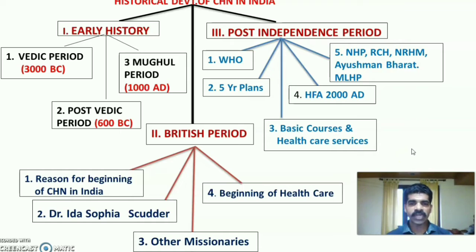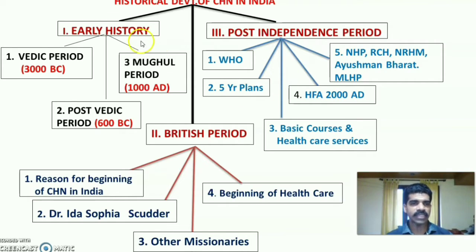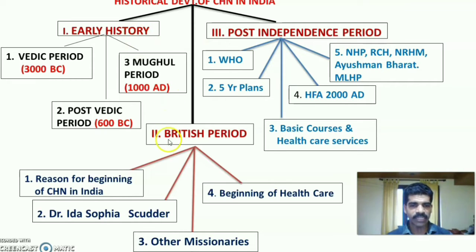For the purpose of study, a diagrammatic representation of the topic has been made. The historical development of community health nursing in India is mainly classified into three broad areas: early history, British period, and post-independence period.